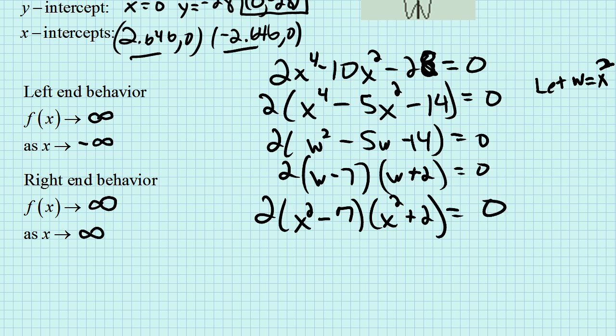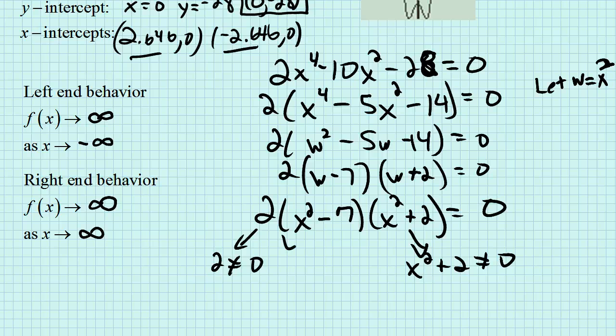If this is going to equal zero, we take these guys and separately set them equal to zero. It won't be that 2 is zero. This guy, x squared plus 2, is never zero because you square something and it's positive, and you add 2 to it, it's more positive.